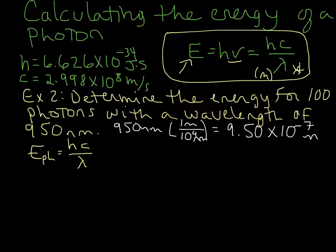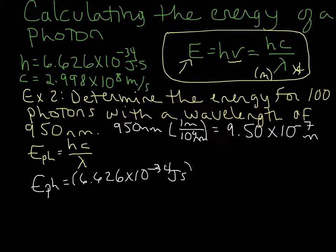So now we're ready to plug everything in. So the energy of our photon is equal to 6.626 times 10 to the negative 34 joule seconds. So Planck's constant,